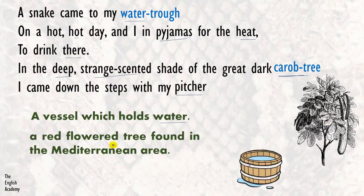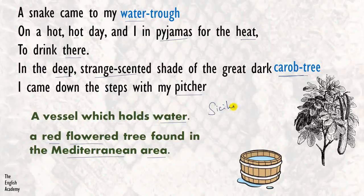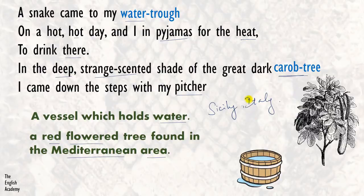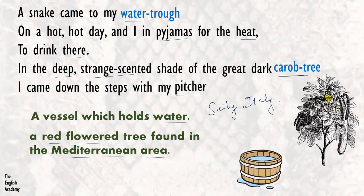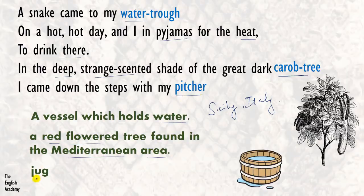A carob tree is a red-flowered tree found in the Mediterranean area. The poet lives in Sicily, which is a town located in Italy, near the Mediterranean Sea. This carob tree is a particular type of tree, like mango, lychee, or banana tree, and is found in the Mediterranean area — so this kind of tree was in the garden. The next word is pitcher: a jug, a vessel, a container used to store water, smaller than the water trough.